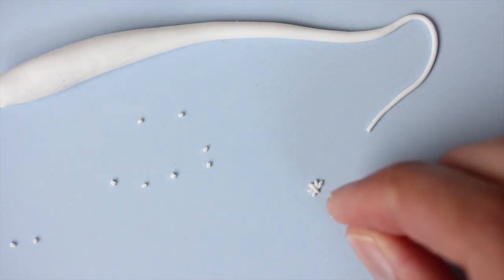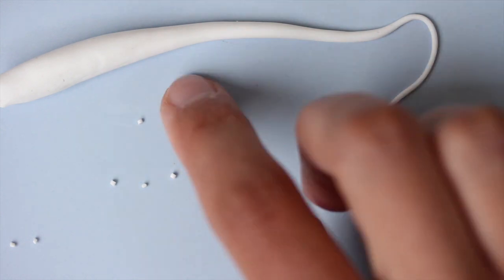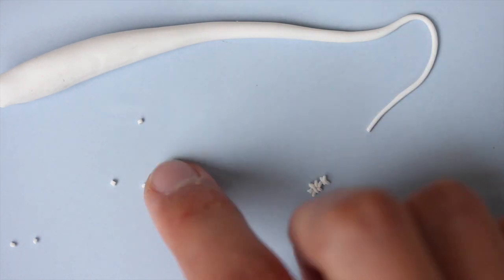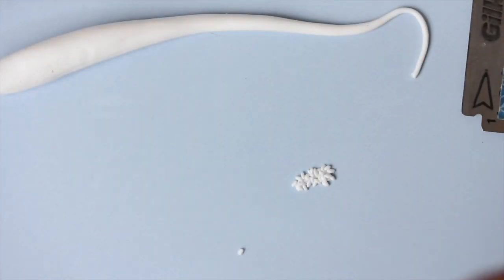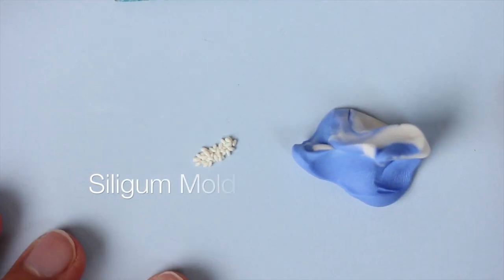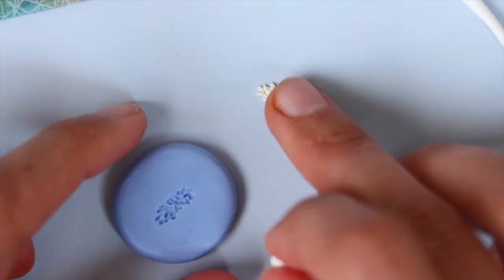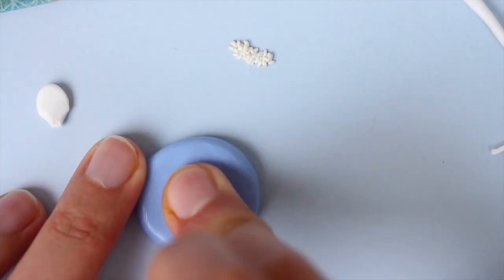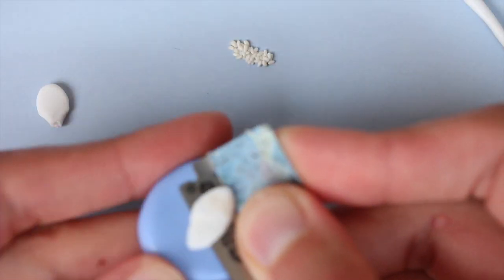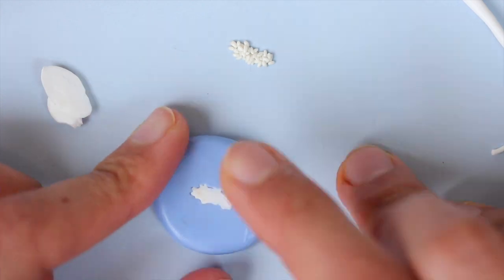Then make a mold from it. I'm using Silly Putty for that, so I can replicate and duplicate the rice much more easily and not lose my sanity, which is always an added bonus to keep your sanity.